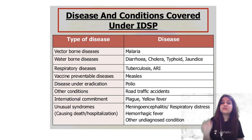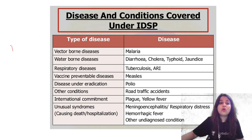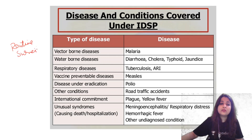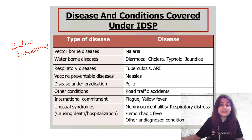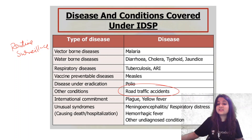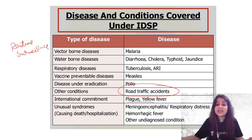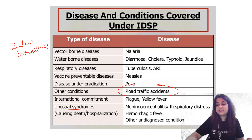You could also be asked: what are the diseases that are under routine surveillance? The diseases under routine surveillance are vector-borne diseases, water-borne, respiratory diseases, vaccine preventable diseases, diseases targeted for eradication like polio, road traffic accidents, diseases which involve international commitment, and also unusual syndromes.